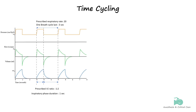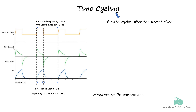A breath is considered time-cycled if the inspiratory phase ends when a predetermined time has elapsed. This is usually a feature of mandatory modes of ventilation. The preset time in time-cycling is determined by the respiratory rate and the inspiratory-to-expiratory ratio set by the clinician.